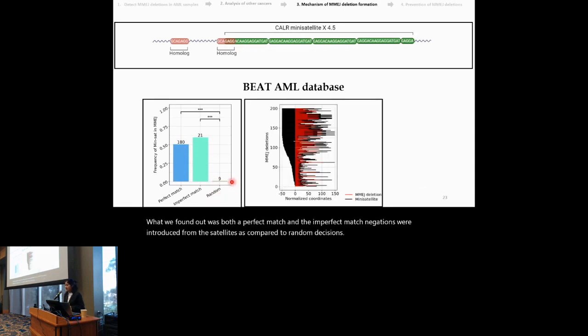We next asked whether these mini-satellites occurred to the left or right of the MMG deletions. But what we saw was there was no such bias and the mini-satellites, here shown in black, occurred and span over the whole of the MMG deletions.